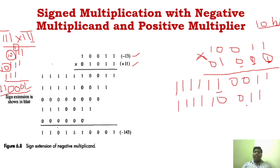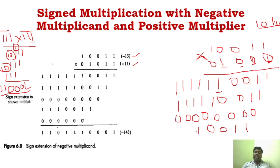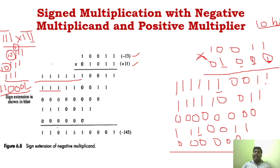After extending the sign bits for all partial products, we perform normal addition. Starting from the right: 1; then 1 plus 1 is 10, so 0 with carry 1; again 1 plus 1 is 10, so 0 carry 1; again 1 plus 1 is 10, so 0 carry 1. With three 1's: 10 plus 1 is 11, carry 1. Three 1's again: 1 and carry 1. Three 1's again: 1 and carry 1. With four 1's: 1 plus 1 is 10, 10 plus 1 is 11, 11 plus 1 is 100, so 0 and carry 10.